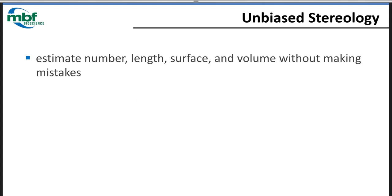The reason everyone is here today is to talk about stereology. Stereology is the scientific study of shapes, but what we want to perform is unbiased stereology — getting estimates of number, length, surface, and volume in a way where we don't make mistakes, such as overestimating the number of cells.